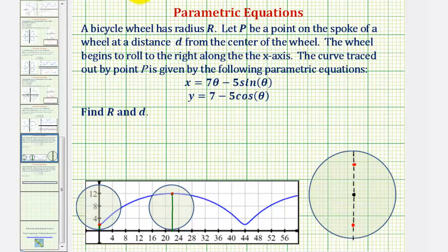So let's focus on our equation for y and determine the minimum and maximum y value. For the minimum y value, remember the output for the cosine function is a closed interval from negative one to positive one, so when cosine theta equals one, we'd have a minimum y value of seven minus five or two.